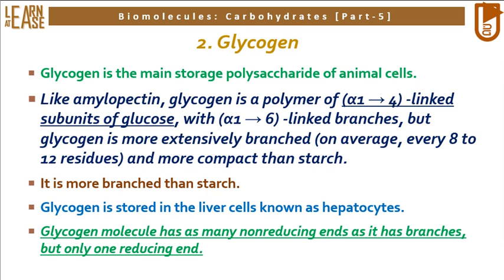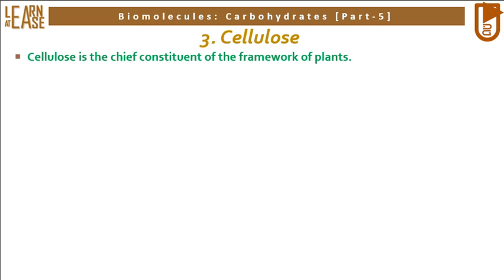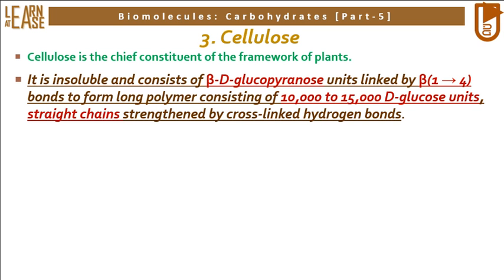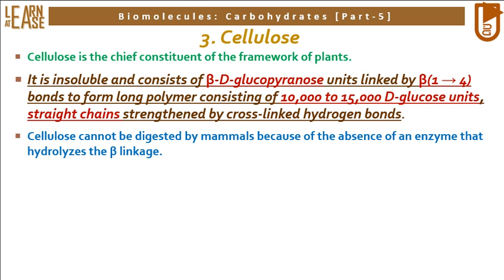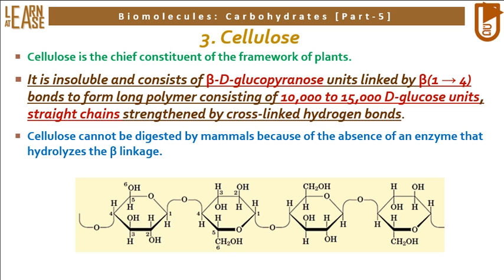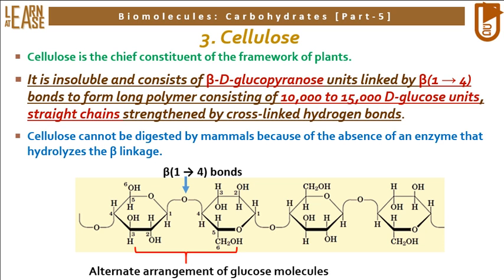The third example of homopolysaccharide is cellulose, the chief constituent of the framework of plants. It is insoluble and consists of beta-D-glucopyranose units linked by beta-1-4 bonds to form long polymers consisting of 10,000 to 15,000 D-glucose units, with straight chains strengthened by cross-linked hydrogen bonds. Cellulose cannot be digested by mammals because of the absence of an enzyme that hydrolyzes the beta linkage. The image shows the structure of cellulose with beta-1-4 bonds and alternate arrangement of glucose residues.